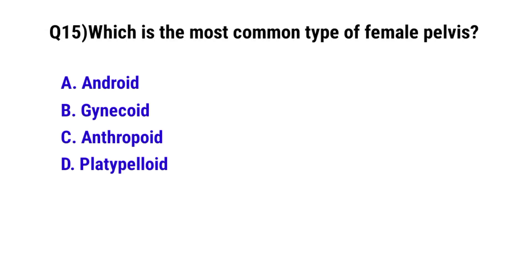Question No. 15: Which is the most common type of female pelvis? The correct option is B: Gynecoid.